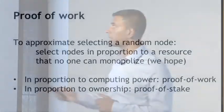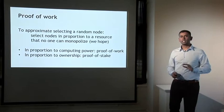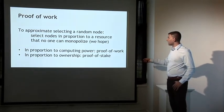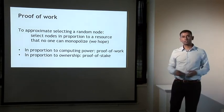It turns out that all of these problems are related and all of them have the same solution, and that solution is called proof of work. Instead of picking a random node, we do something a little bit different: we approximate selecting a random node by instead selecting nodes in proportion to a resource that we hope nobody can monopolize. If that resource is computing power, then it's a proof of work system where we select nodes in proportion to their computing power.